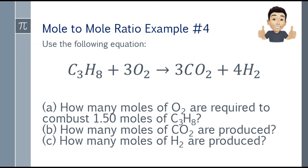Last example — mole-to-mole ratio example 4. Use the following equation: propane + oxygen gas = carbon dioxide + hydrogen gas. The questions are: (A) how many moles of oxygen gas are required to combust 1.5 moles of propane? (B) how many moles of CO2 are produced? (C) how many moles of H2 are produced?